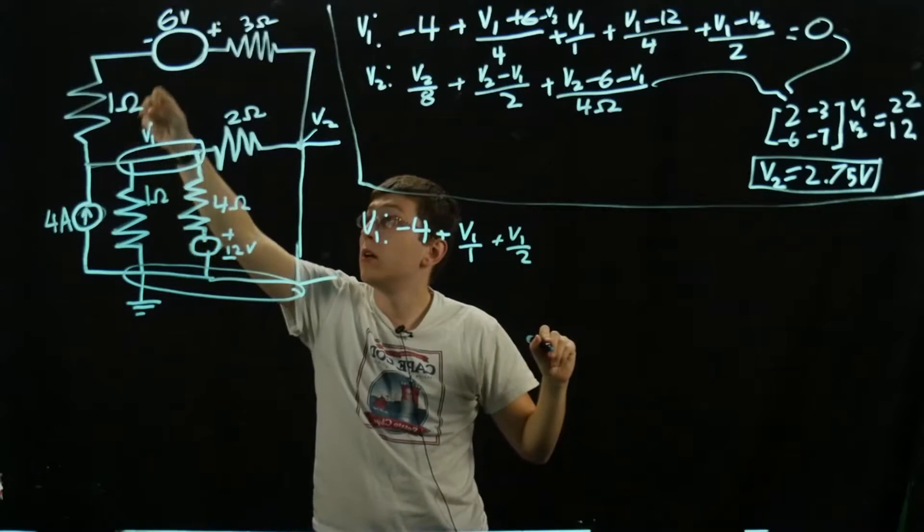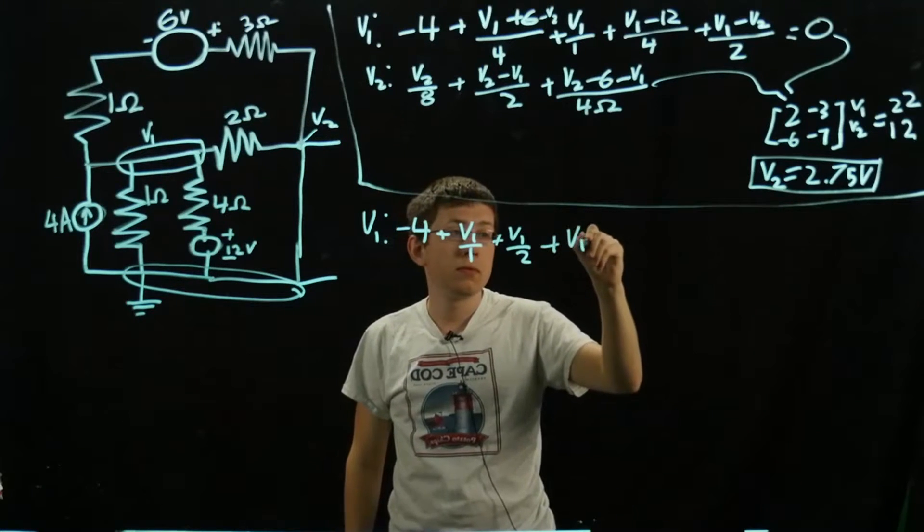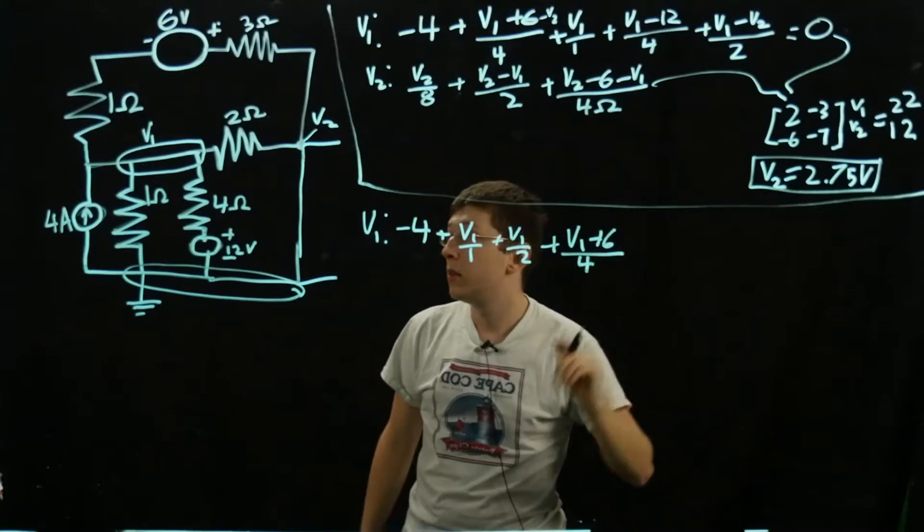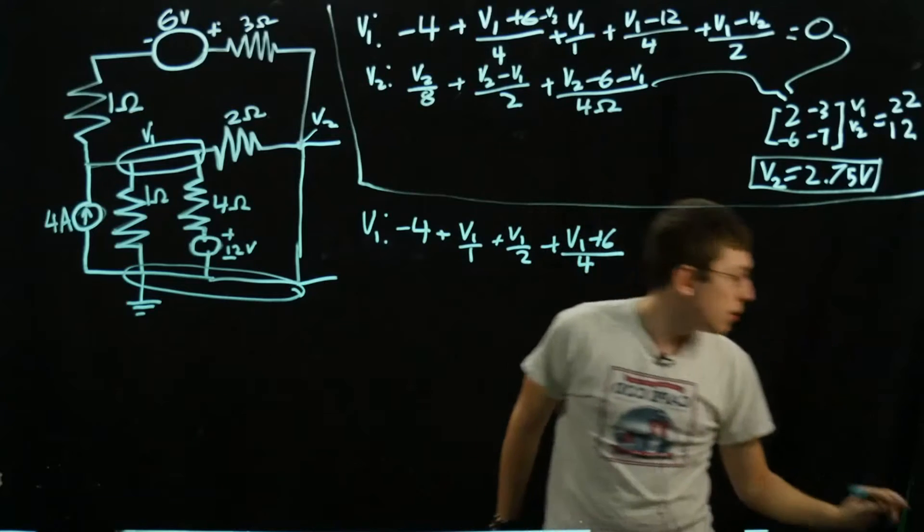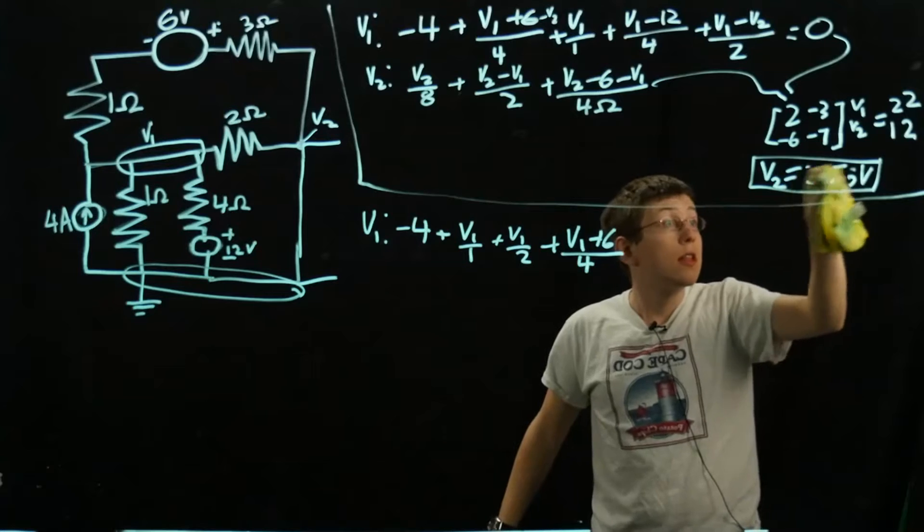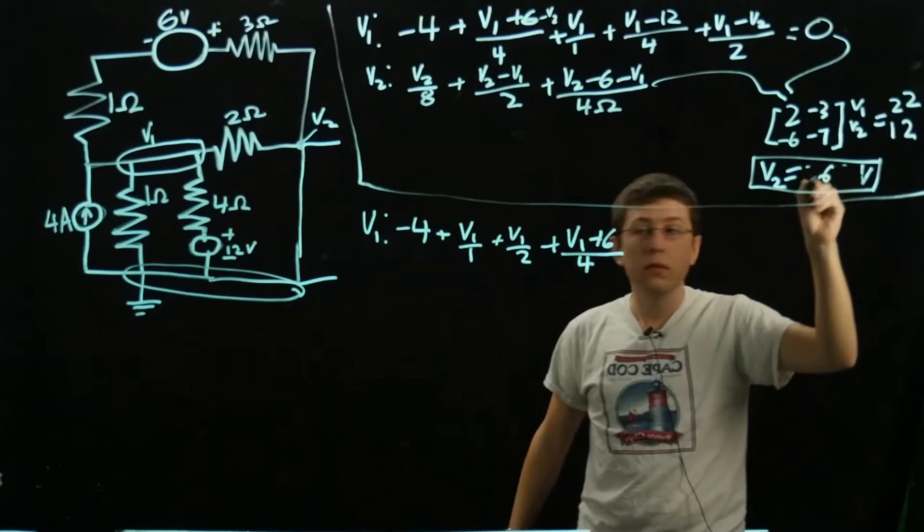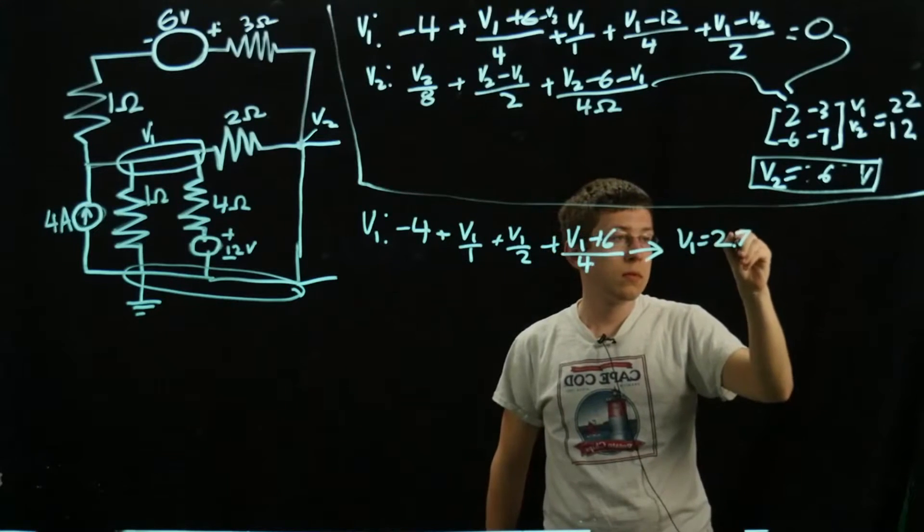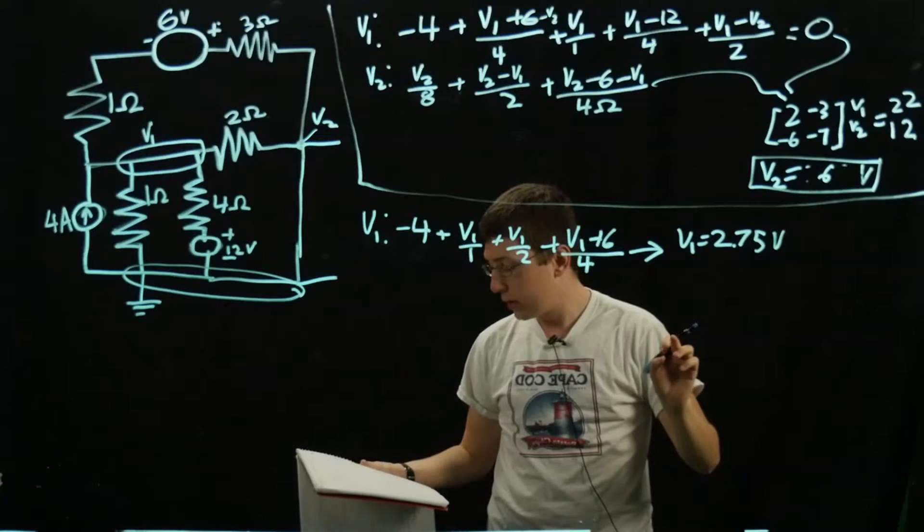Then V1 + 6 - 0. My apologies, this should have been 6 volts. Our second voltage is 2.75. From now, the bulk of the work is actually done.